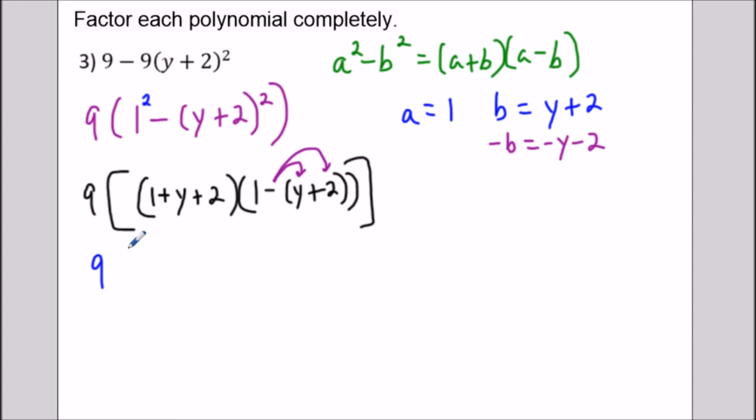So for the next line, we're going to have 9 times. And then in the first parenthesis, we could simplify 1 + y + 2 is y + 3. And then in the second parenthesis, we're going to have 1 - y - 2. And then we'll close this bracket. So then this is going to simplify more, we have 9(y + 3). And then in the second parenthesis here, we have 1 - y - 2.